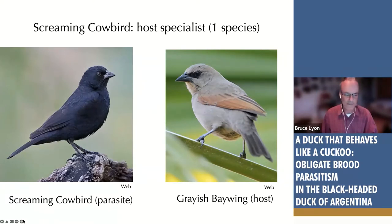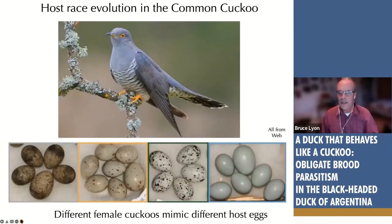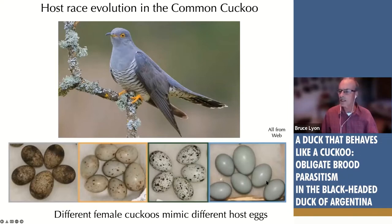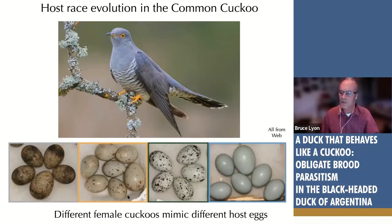Cuckoos are a bizarre example. At the species level, cuckoo eggs are found in hundreds of different host species, but there are genetic lineages of female cuckoos that specialize on different hosts and evolve over time to mimic their hosts. These are eggs of five different European songbirds — each has a cuckoo egg in it. You can see highly mimetic eggs: a cuckoo egg in a redstart nest, a cuckoo egg in a reed warbler nest, each incredibly well-matched.